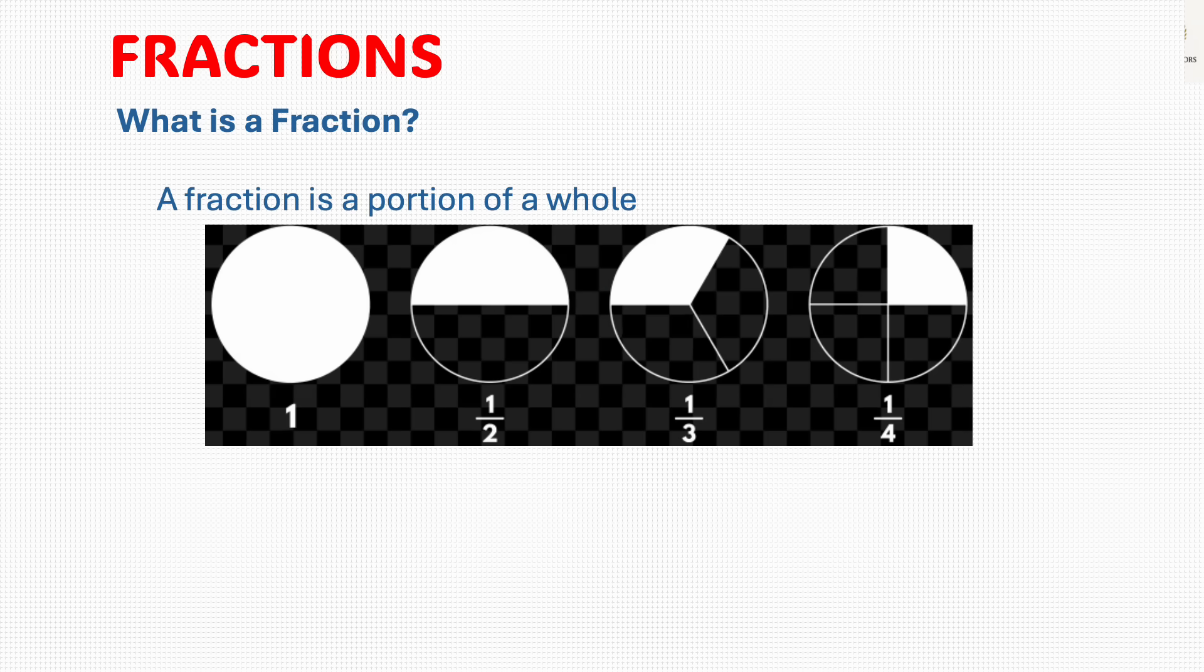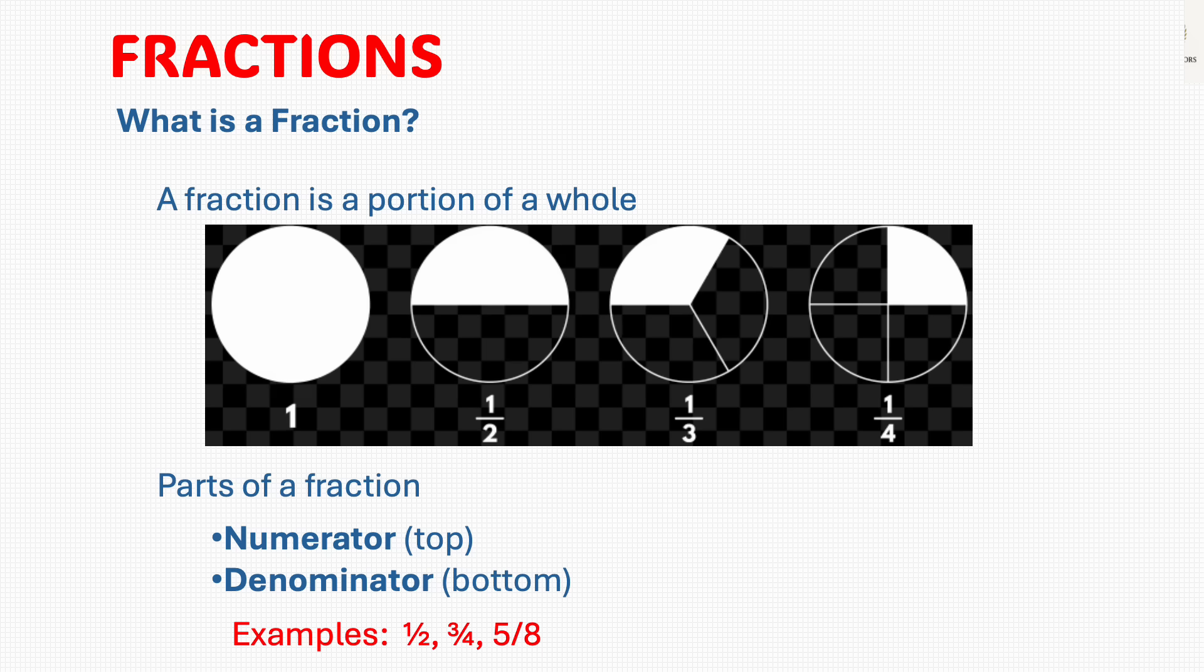A fraction represents a portion of a whole. The numerator is the top number and the denominator is the bottom number. Examples include 1 half, 3 quarters, and 5 eighths, and so on. Fractions appear everywhere: in cooking, shopping, science, and more.